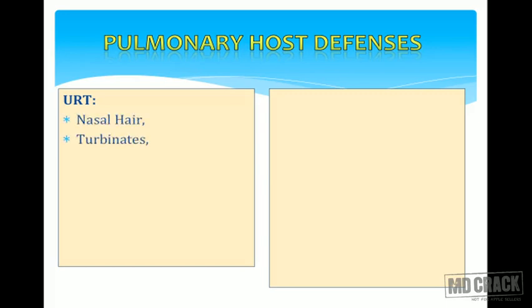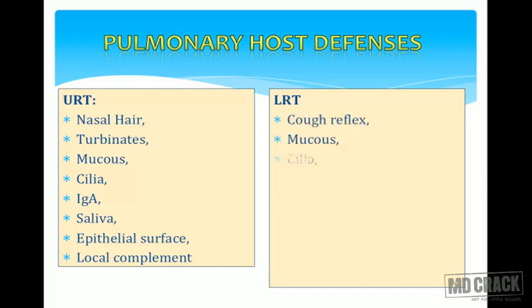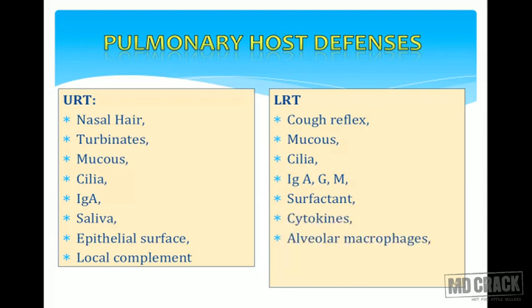In the upper respiratory tract, we have nasal hairs which filtrate the air we inhale, turbinates, thick mucus secretions, cilia, immunoglobulins like IgA, saliva, epithelial surface, and local complementary products. All these components act like host immune barriers to prevent infections. In the lower respiratory tract, we have a cough reflex, mucus, cilia, immunoglobulins like IgA, IgG, IgM, surfactant, cytokines, and alveolar macrophages which engulf anything foreign to the lungs.